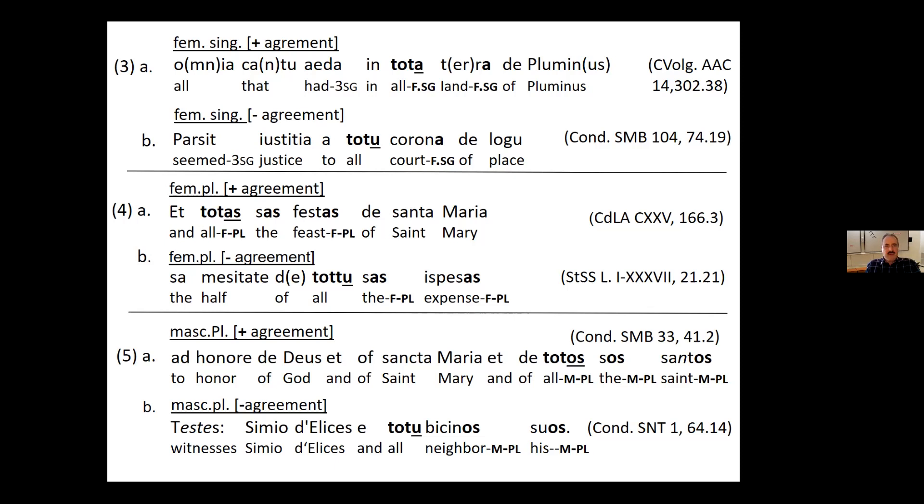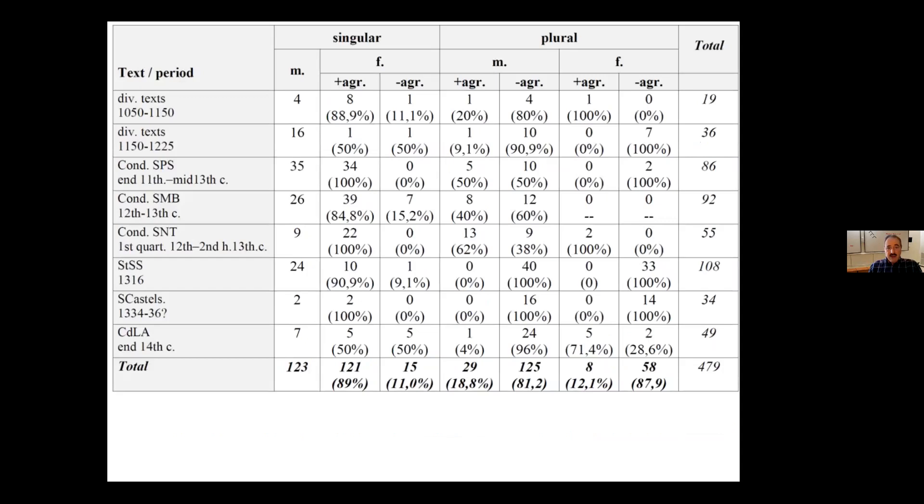I ordered these occurrences with respect to gender and agreement. The masculine singular is not really much sense to list because it could either be agreement or just the default form. So I stick to these three. And we see feminine singular, we have agreeing TOTTO in TOTTA Terra, and non-agreeing TOTTO Corona. This is the distribution.